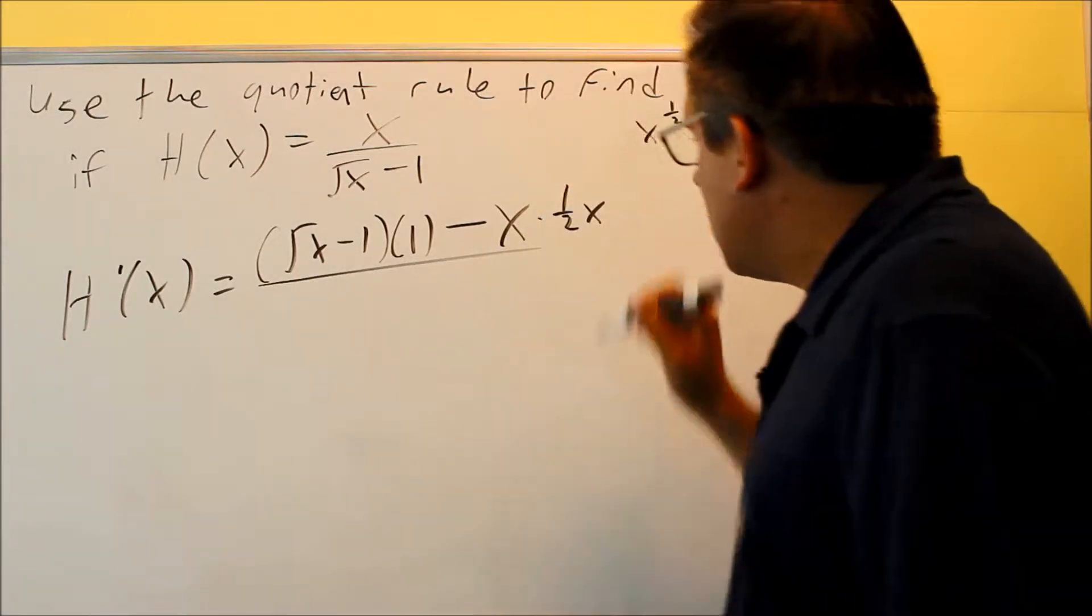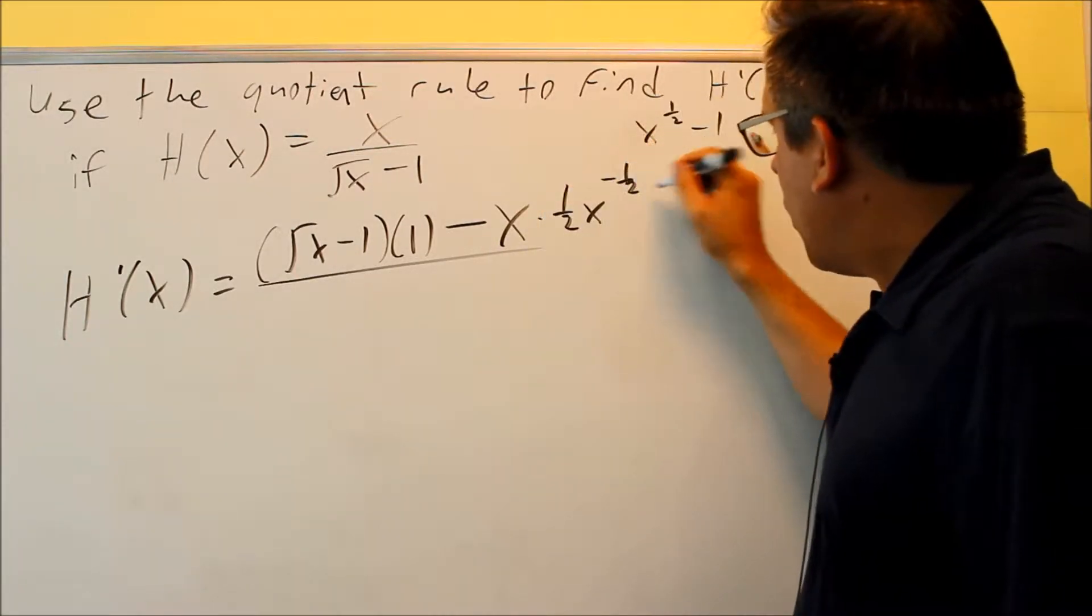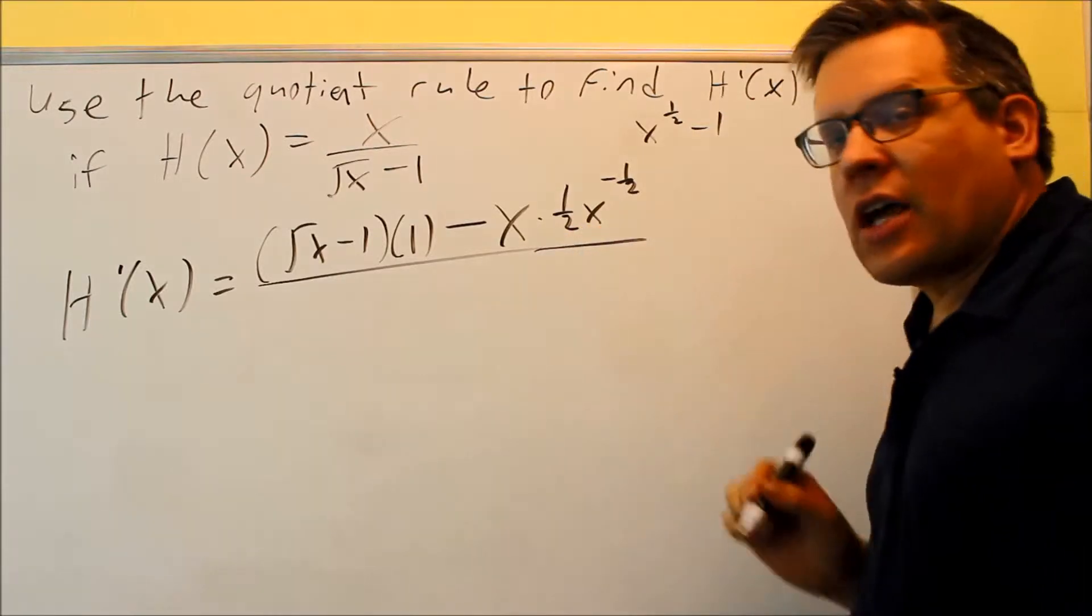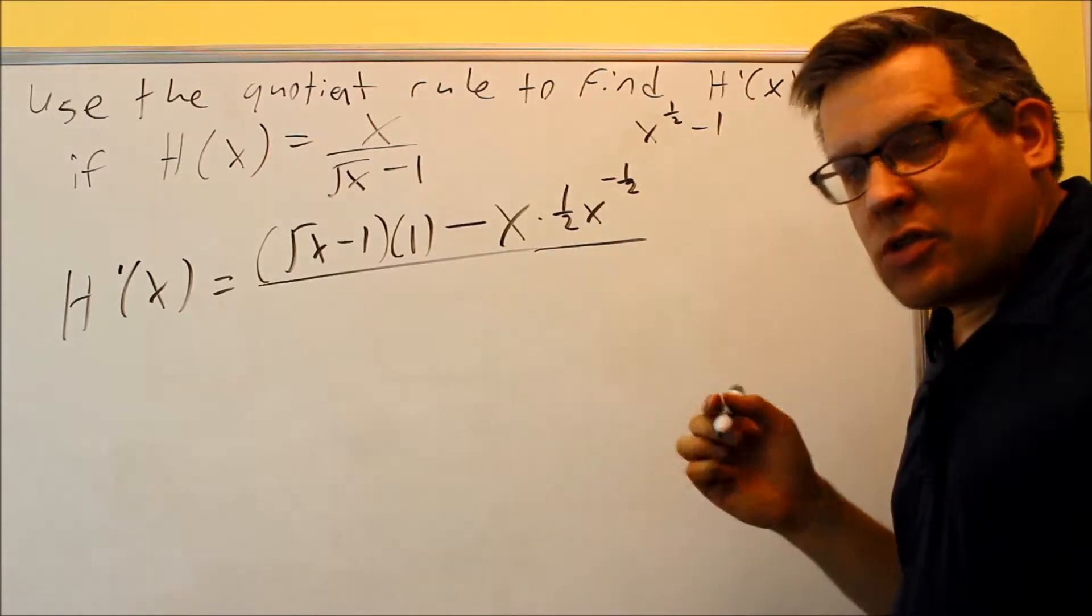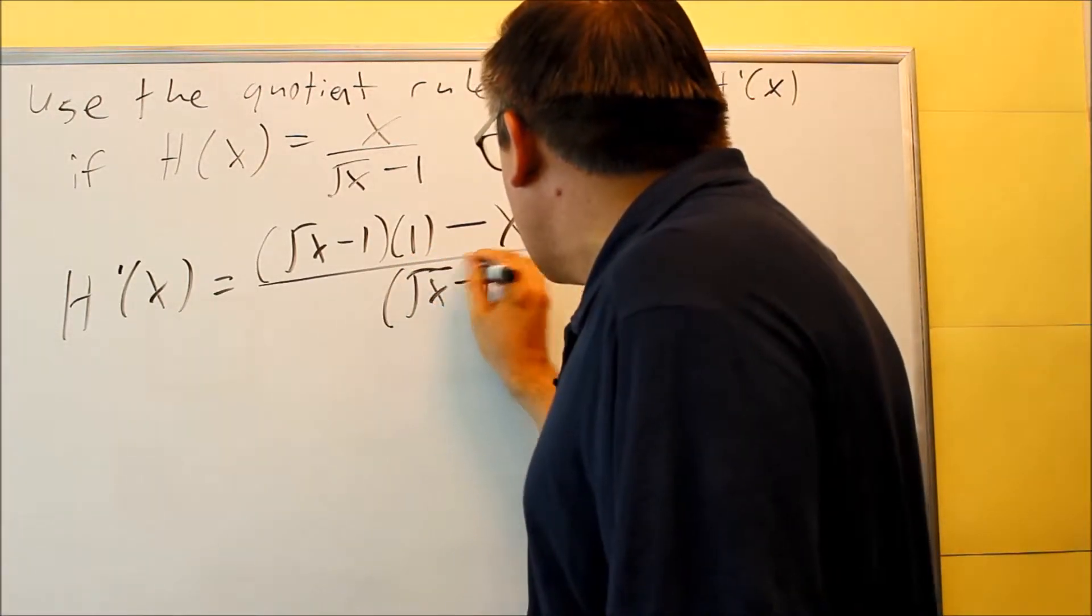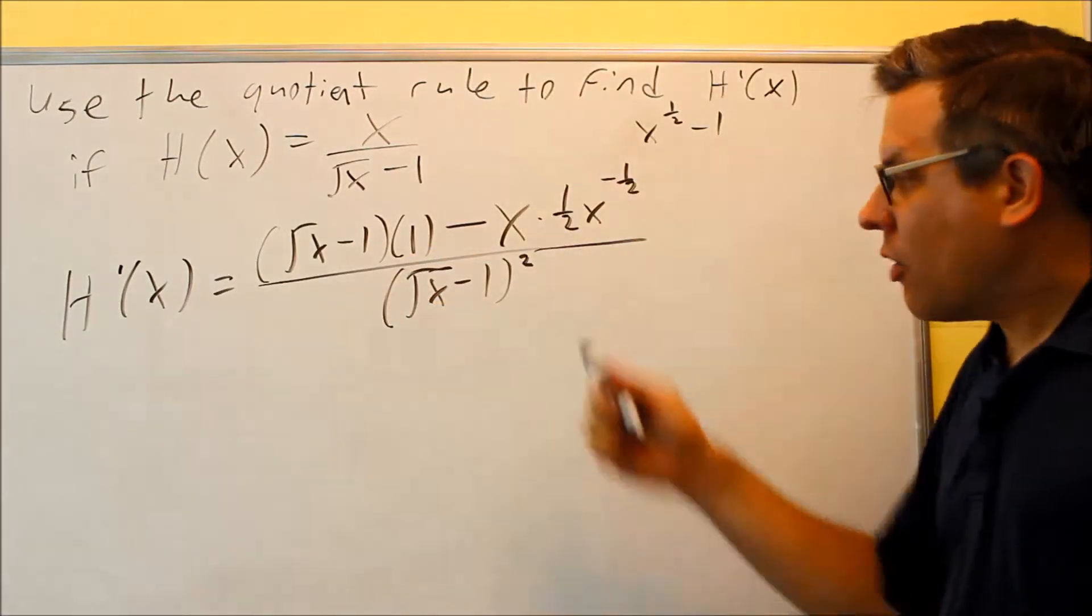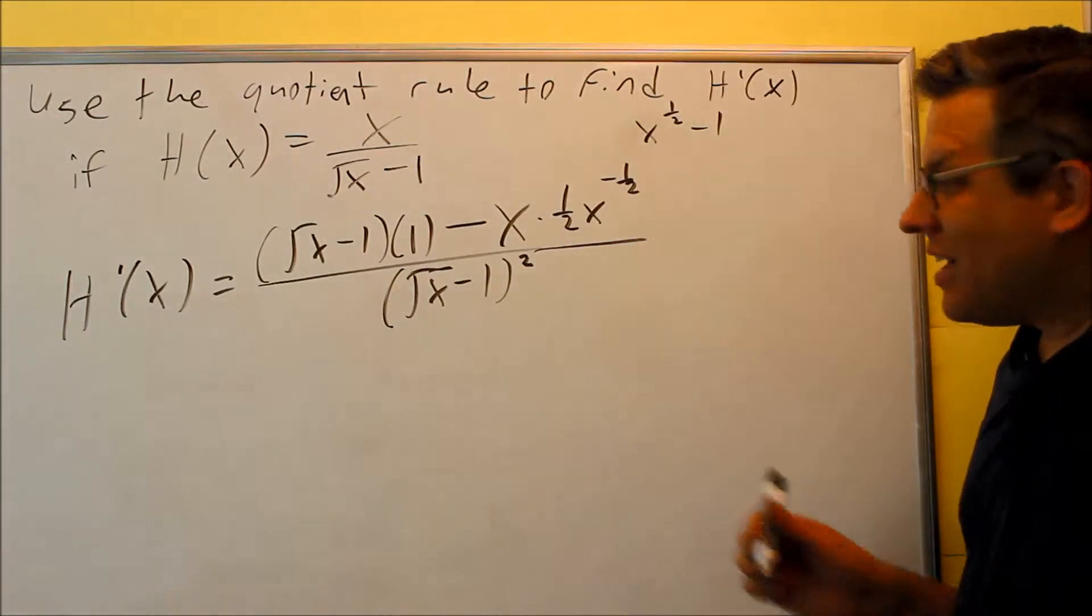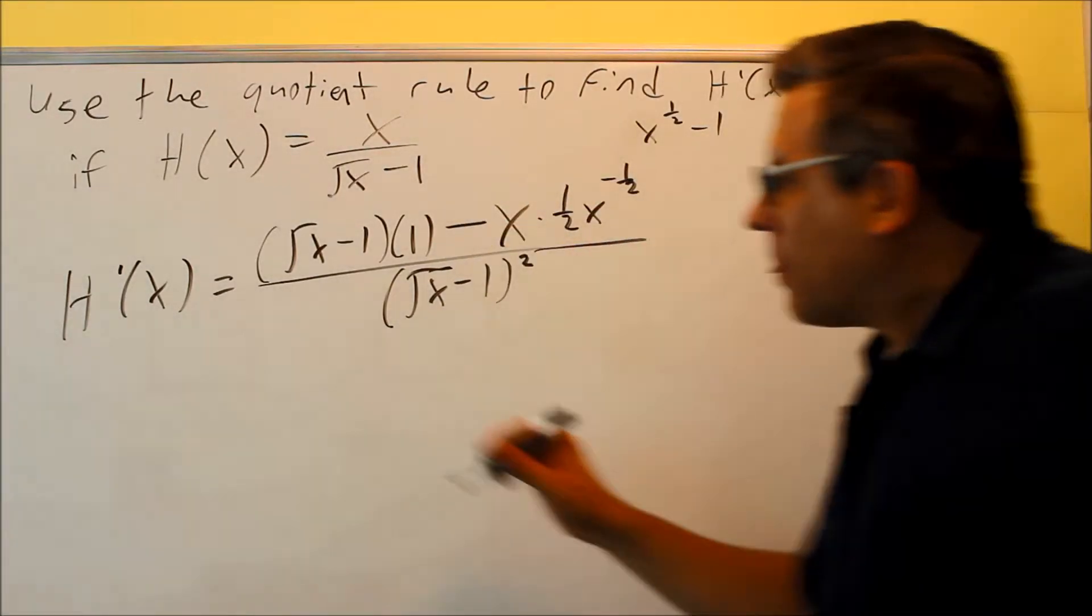The 1 half is going to come down, and then we subtract 1 from the exponent, and you get x to negative 1 half. The derivative of negative 1 is going to be 0. The bottom one, we're going to square that one, because your formula says g squared. It's always your bottom one squared. Now it's just a matter of cleaning that up.